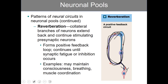Two main examples of positive feedback would be childbirth. When the child grows to a certain size and birth is imminent, the stretching of the uterus causes these signals to be generated. A positive feedback loop causes the uterus to contract more and more strongly until the event occurs — in this case, birth. That is reverberation and those are the neuronal pools.